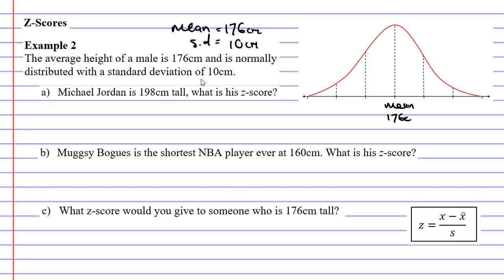It has a Z score of 0. If we keep adding 10 each time we get 186 with a Z score of positive 1, 196 with a Z score of positive 2, and 206 with a Z score of positive 3.